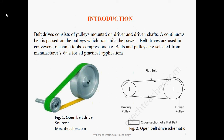Belt drives consist of pulleys mounted on driver and driven shafts, and a continuous belt passed over the pulleys which transmits the power. Belt drives are extensively used for industrial applications like conveyors, compressors, machine tools, etc. Belts and pulleys are mechanical standard elements available in the market and are required to be selected from manufacturer's data for all practical applications.